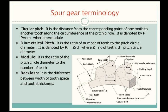Next is diametrical pitch. It is the ratio of the number of teeth to the pitch circle diameter. If you take a complete spur gear, it will have many teeth on its circumference, so diametrical pitch is the ratio of the total number of teeth present on the spur gear to the pitch circle diameter.